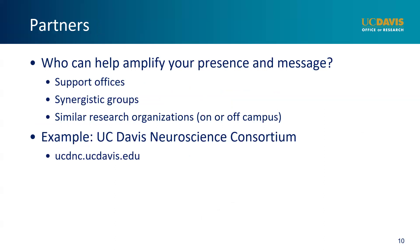When you have nailed down your messaging and know who you want to reach with it, think about who can help you get the word out. Does the college or department of anyone associated with you have resources? Are there offices on campus, like the Office of Research, who can help you? Are there synergistic groups that you can join or help create that can boost awareness of what you are doing? Are there similar research organizations, on or off campus, that you can partner with? A great example of synergy and partnership is the UC Davis Neuroscience Consortium. Recognizing that UC Davis has one of the largest neuroscience communities in the world, the faculty, departments, centers, and institutes doing neuroscience research have come together to put it all in one place, so to speak.